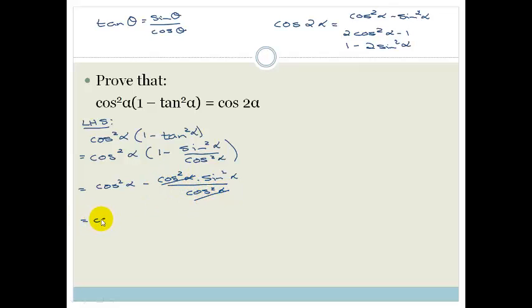So that becomes cos squared alpha minus sin squared alpha, but cos squared alpha minus sin squared alpha is cos 2 alpha. So that becomes equals cos 2 alpha, which equals the right hand side, and ta-da, we have just proven that this thing on the left hand side equals cos 2 alpha. So let's do another example.